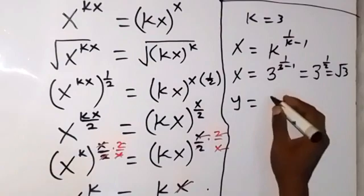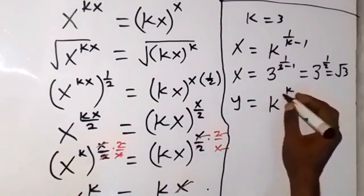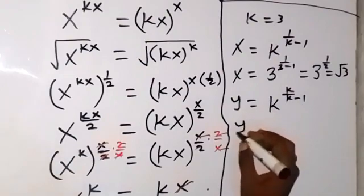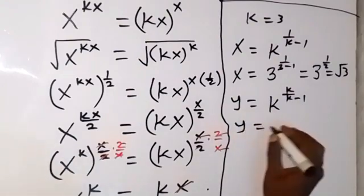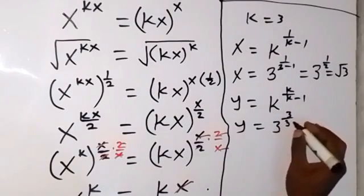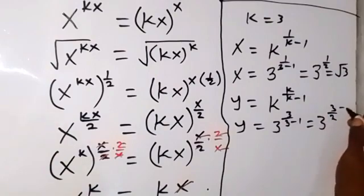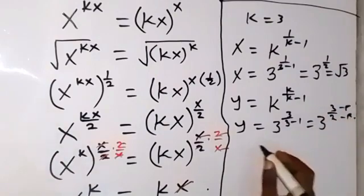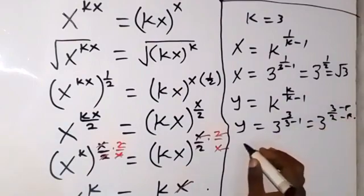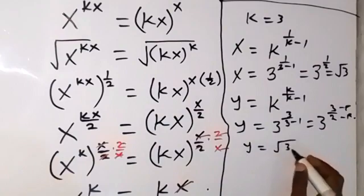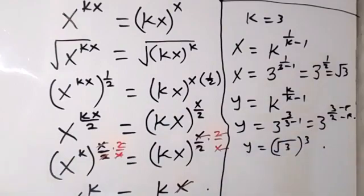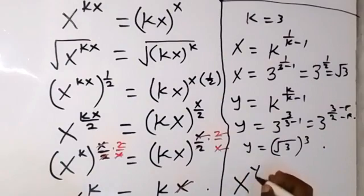Also, for k equals 3, y equals k raised to power k over k minus 1, giving us 3 raised to power 3 over 3 minus 1, which equals 3 raised to power 3 over 2. Writing this in radical form, y equals the square root of 3, raised to power 3. Now let's check whether this satisfies the original equation x raised to power y equals y raised to power x.